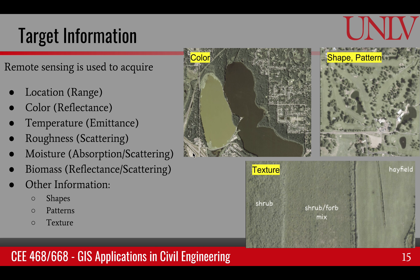We can tell about roughness — rough surfaces scatter more energy compared to smooth surfaces. We can also tell information about moisture and biomass on the surface. For example, if it's a vegetated surface or wet surface, based upon how much light gets absorbed, scattered, or reflected. And we can tell many other things about the surface, for example, the shapes, patterns, and textures.